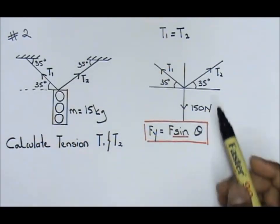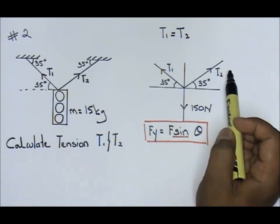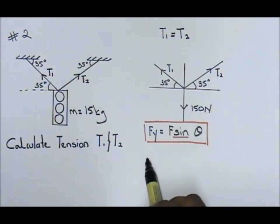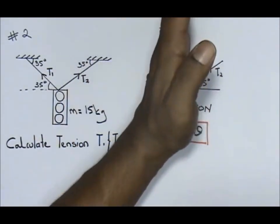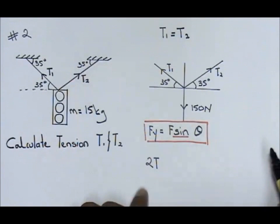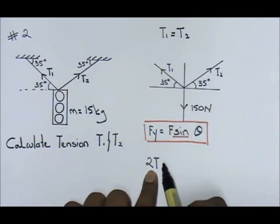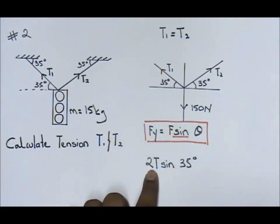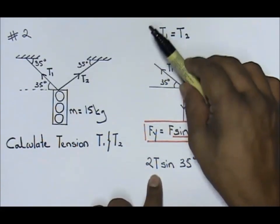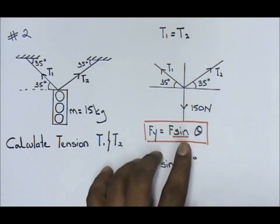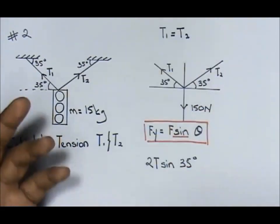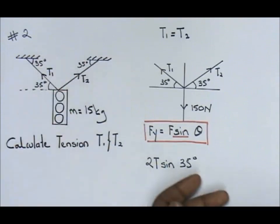What I'm going to do is, first, T1 and T2, I told you it's the same thing. So I'm going to take 2T, that means T1 and also T2. 2T, bring it to your Fy will be sine 35 degrees. Some students say, I don't understand how you get 2T sine 35, sir. T1 sine 35 plus T2 sine 35, so at the end you'll get 2T sine 35.